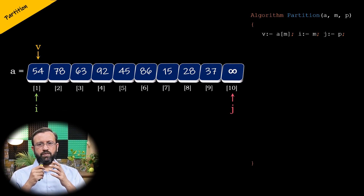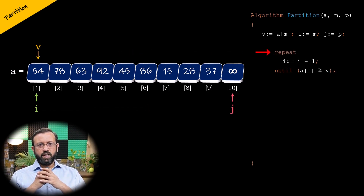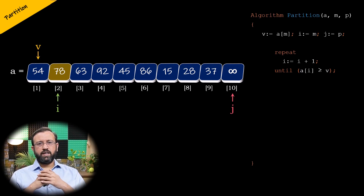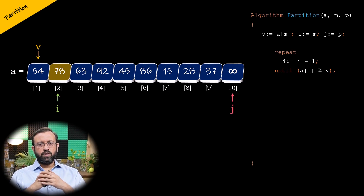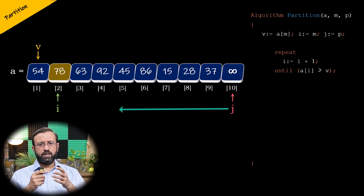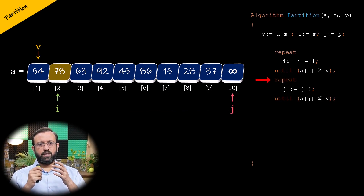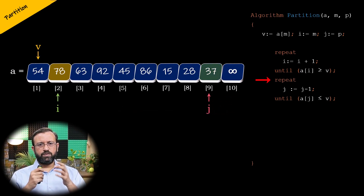To do this, we will use a repeat-until loop and increment the variable i until the element at A of i is greater than or equal to the pivot element. Then if any element is greater than the pivot, then place that element on the right side of the pivot element. So we will move the index J from right to left to search for elements smaller than the pivot element, using a repeat-until loop and decrement the variable j until the element A of j is less than or equal to the pivot element V.